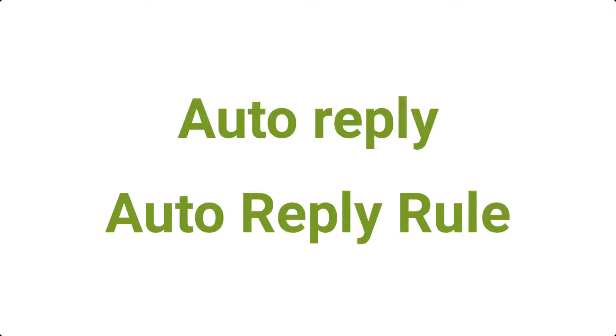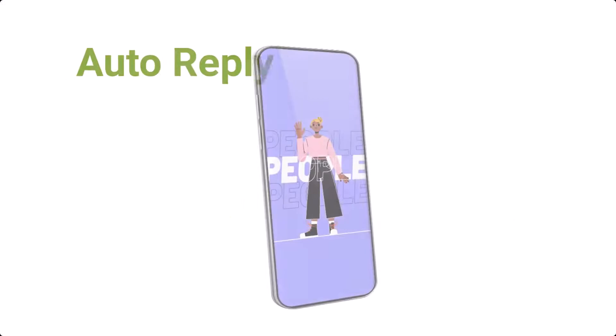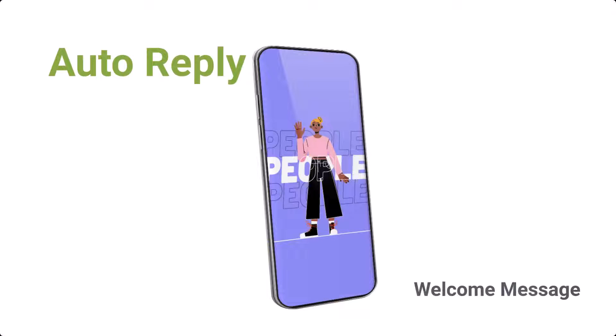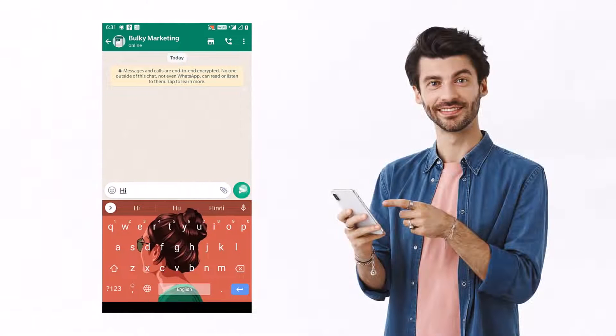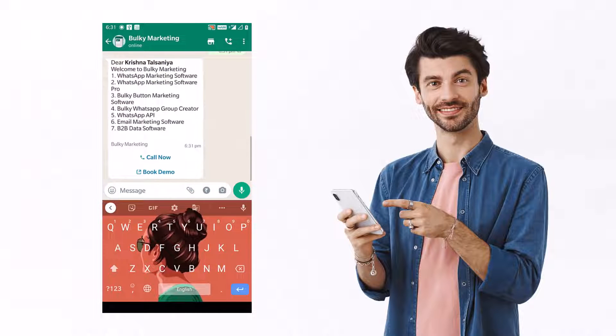Now let's look at other functions. We are moving directly to Auto Reply and then Auto Reply Rules. In Auto Reply we will set the welcome message, and in Auto Reply Rules we will set the replies or answers for our quick reply buttons. You may have noticed that sometimes you get a welcome message when you text someone on WhatsApp — this feature is available in our software.